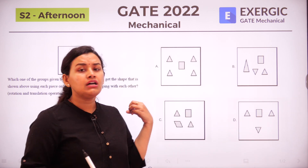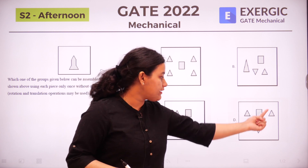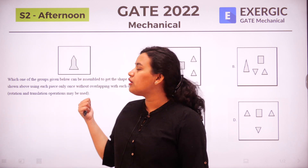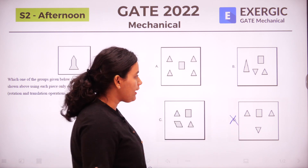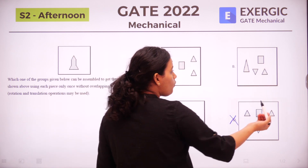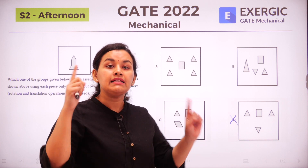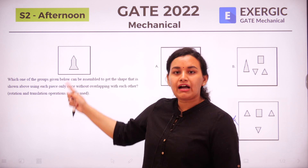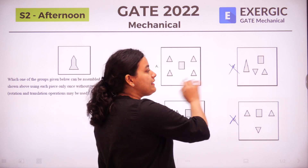Let's first try to get rid of the options that are obviously incorrect. Looking at option D, we have three triangles and one rectangle, which will never give us this particular rocket-shaped figure, so it gets cancelled right away. Option B also has three triangles and one rectangle, but the most distinctive feature is that one triangle is really very long, and since scaling is not allowed in assembly questions, we don't have such a long triangle in the given figure. So option B is also incorrect.